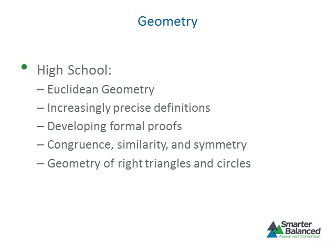The fifth conceptual category is geometry. High school mathematics, for the most part, is devoted to the study of Euclidean geometry. During high school, students will extend previous geometric understandings from middle school through the use of increasingly precise definitions and through the process of developing formal proofs. Students will study the concepts of congruence, similarity, and symmetry, as well as the geometry of right triangles and circles.